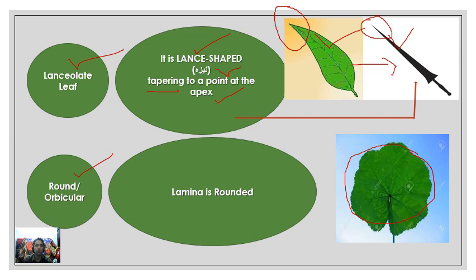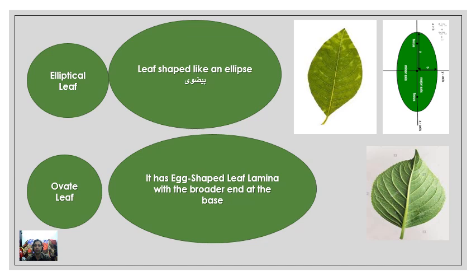Next is the rounded leaf. Here you can see the lamina is roughly circular in shape.